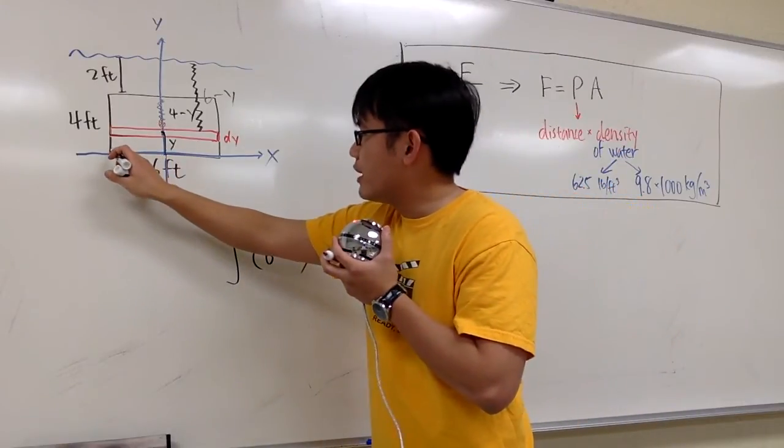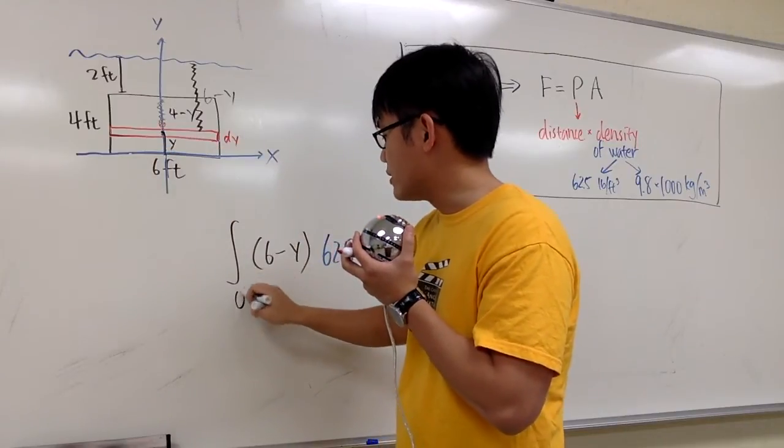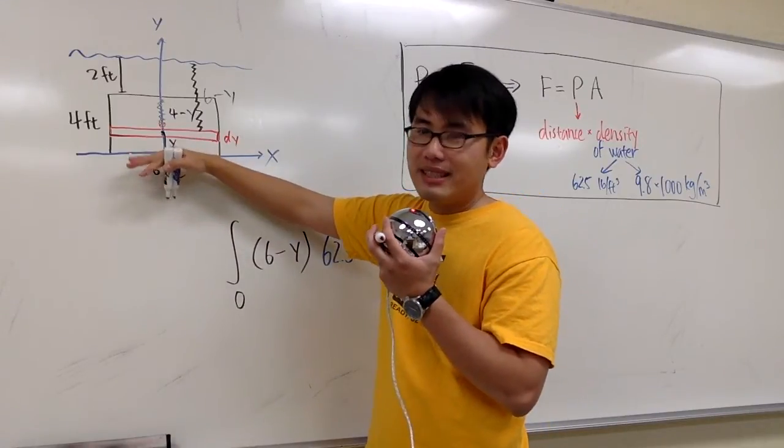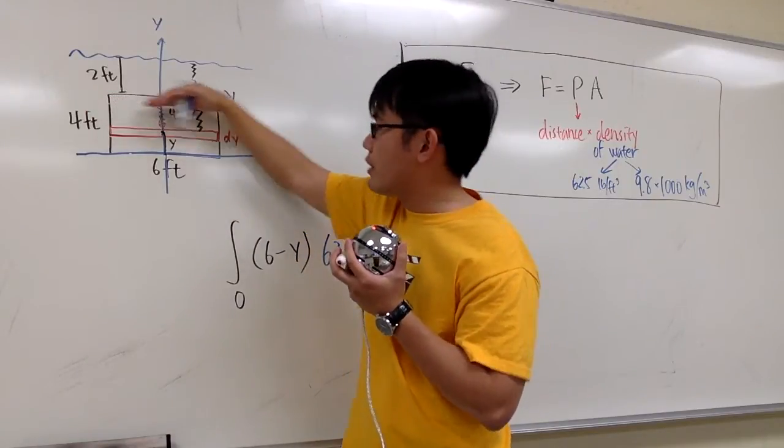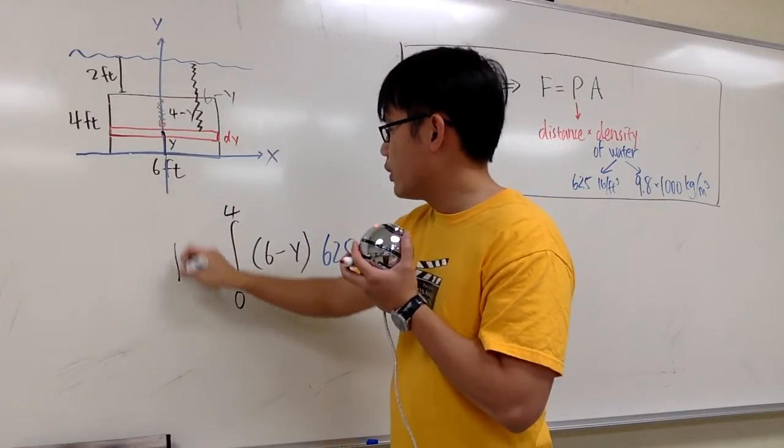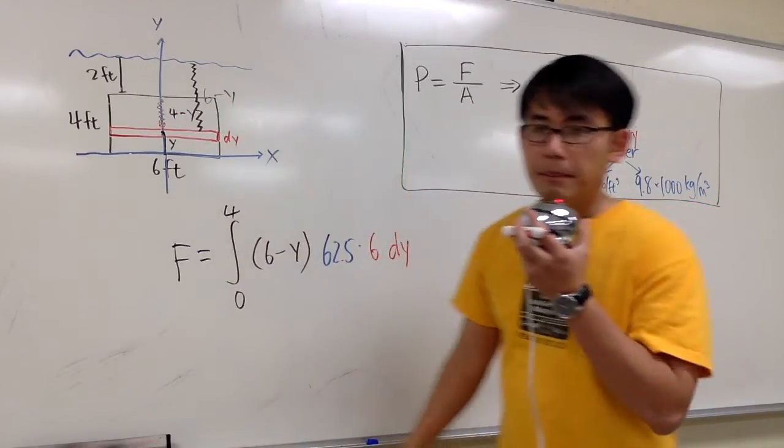The very first rectangle is technically down here, when the y value is equal to 0. So it's going from 0 up to what? Up to the very last one, which is only when y is equal to 4, right here. And this right here will give us the force that's acting on this rectangular plate, when you put the plate vertically into the water.